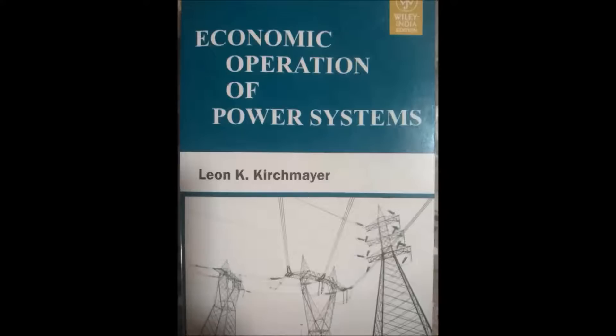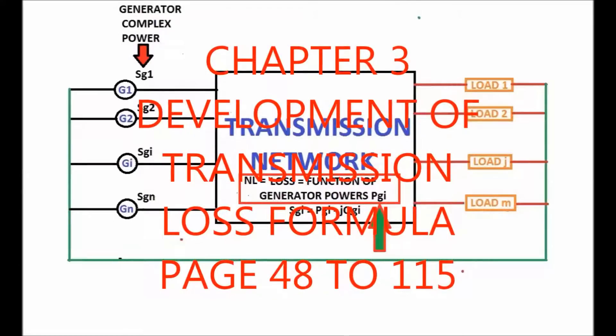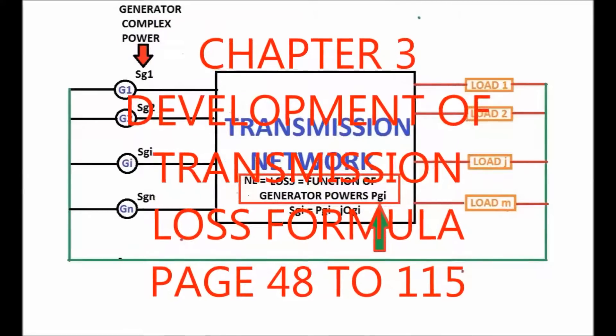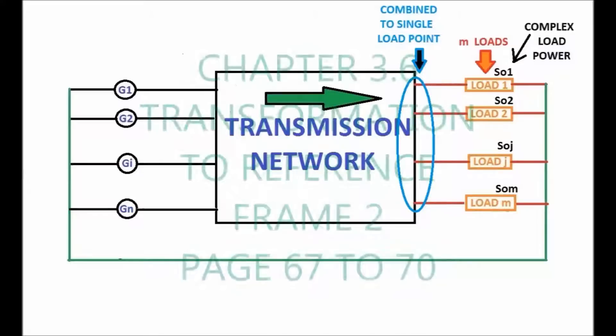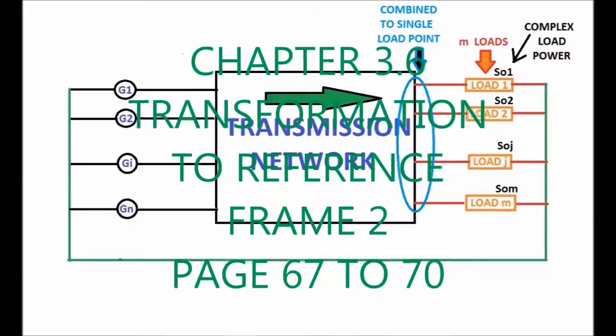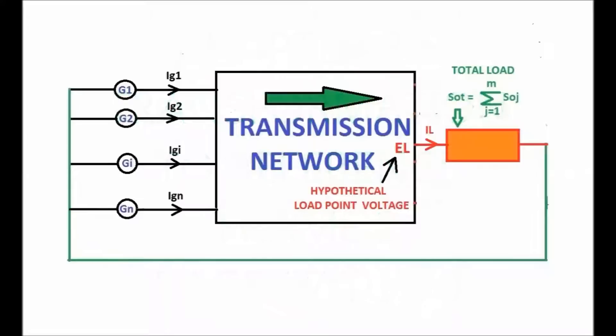He has developed a formula for transmission network loss in terms of generating powers, i.e., input of the network. It involves many matrix operations to find the hypothetical load point voltage, i.e., combining all the loads and making them available at one point. Linear transformations are performed on load currents to find the voltage of the hypothetical load point.